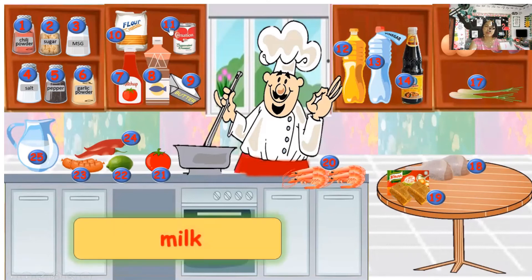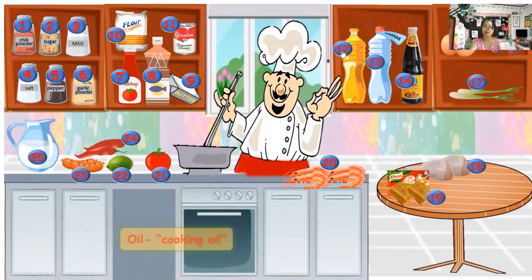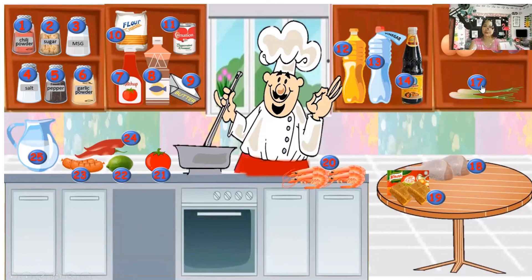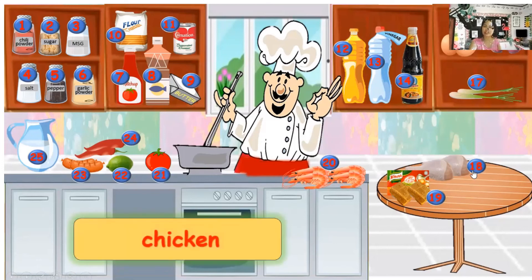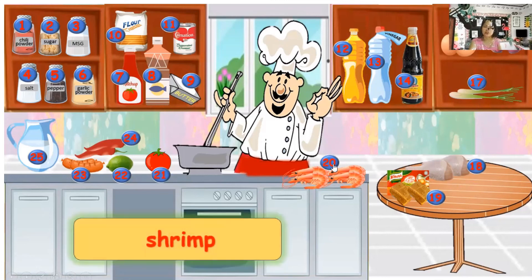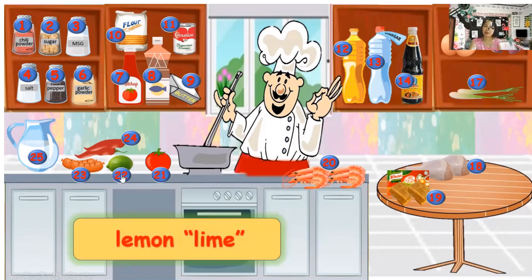Continuing the review: flour, milk or evaporated milk, cooking oil, vinegar, soy sauce, eggs, onion — most of our cooking uses onion — lemongrass, chicken, some people use knorr cubes for strong meat flavoring, shrimp, tomato, and lemon or lime.